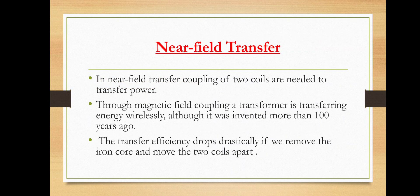The second is near-field transfer. In near-field transfer, coupling of two coils is needed to transfer the power. Through magnetic field coupling, energy is transferred wirelessly, although it was invented more than 100 years ago. The transfer efficiency drops drastically if we remove the iron core and move the two coils apart. That is why the two coils must be put close enough to each other. This method is already launched in the market — for example, most electric toothbrushes use wireless chargers which are much safer than cable chargers in wet environments.